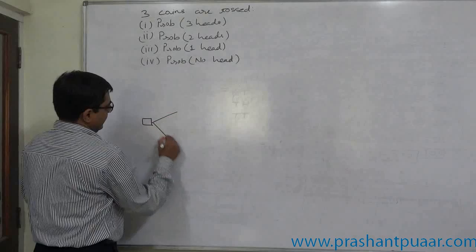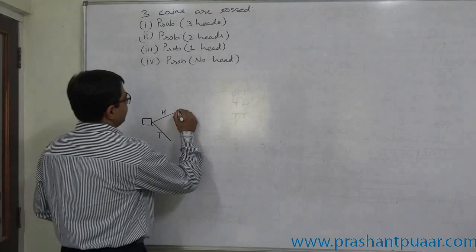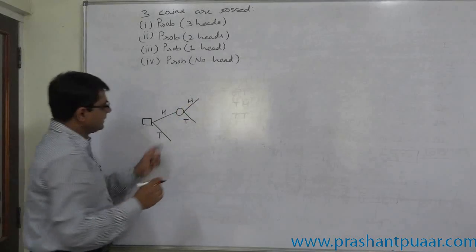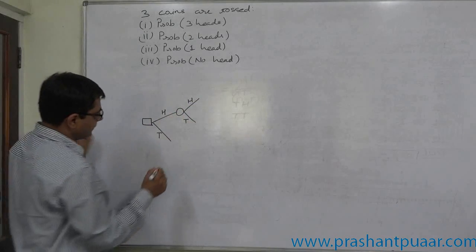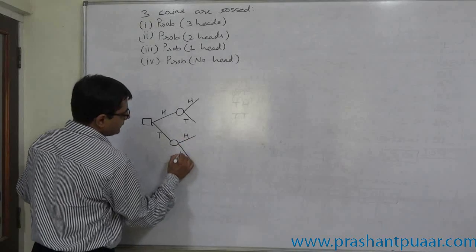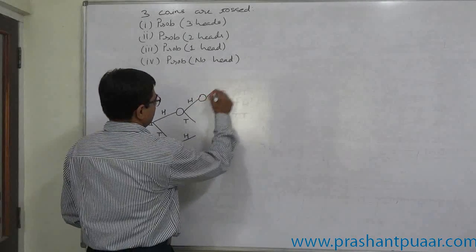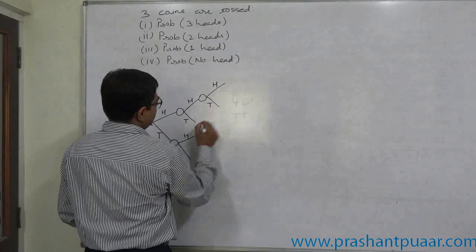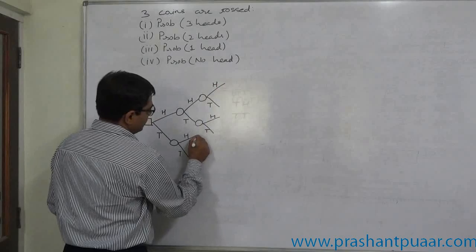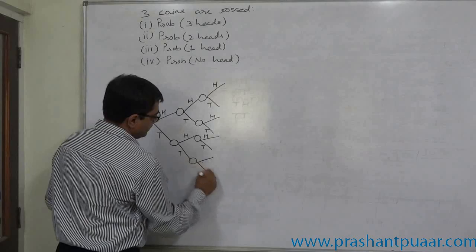Head or tail on the first coin, then the second coin — again head or tail is possible. Head on first and head or tail on second, or tail on first, head on second or tail on first, tail on second. Now the third coin is also tossed — again head or tail for each branch.